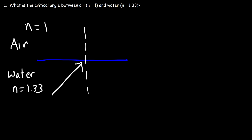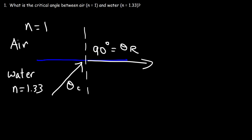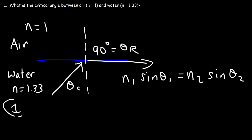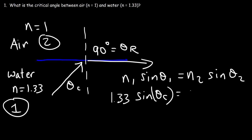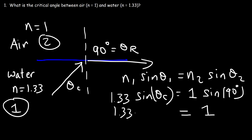What is the critical angle between air and water? Keep in mind the incident angle is the critical angle when the angle of refraction is 90°. So theta-r equals 90°. Let's calculate the critical angle using Snell's law: n1 sine(theta1) = n2 sine(theta2). We'll use subscript 1 for water and subscript 2 for air. So n1 = 1.33 times sine of the critical angle, and that equals n2 = 1 times sine of 90°.